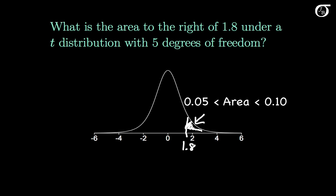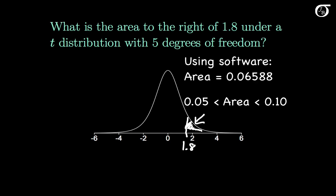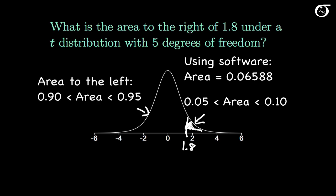If we needed the exact value, we'd use software, which gives the area to 5 decimal places as 0.06588. If we needed the area to the left of 1.8, since the area under the entire curve is 1, that equals 1 minus the area to the right. Based on the table, the area to the left of 1.8 under a t-distribution with 5 degrees of freedom lies somewhere between 0.90 and 0.95.